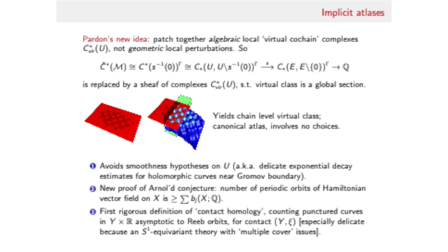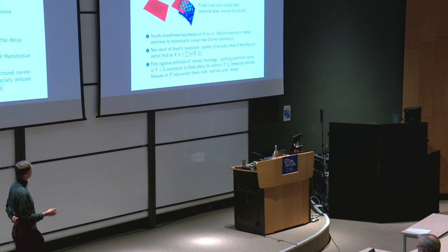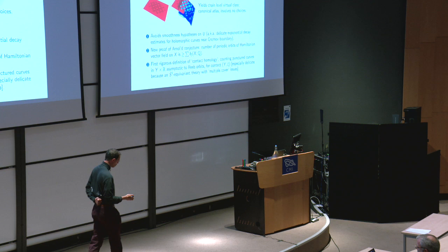In particular this led both to a streamlined proof for the Arnold conjecture, which was first proved by Fukaya and Ono and Liu and Tian independently, but also a rigorous definition of contact homology - a sort of holomorphic curve theory in the setting of a contact manifold times R, a very special kind of non-compact symplectic manifold, which is difficult because it's by its nature an S^1-equivariant theory amongst other reasons.